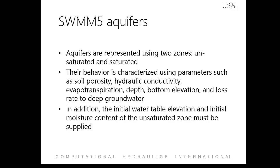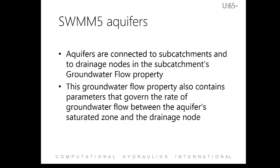Aquifers are represented using two zones: the unsaturated and saturated. Their behavior is characterized using parameters such as soil porosity, hydraulic conductivity, evapotranspiration, depth, bottom elevation, and loss rate to deep groundwater. In addition, the initial water table elevation and initial moisture content of the unsaturated zone must be supplied. Aquifers are connected to subcatchments and to drainage nodes in the subcatchment's groundwater flow property. This property also contains parameters that govern the rate of groundwater flow between the aquifer's saturated zone and drainage node.